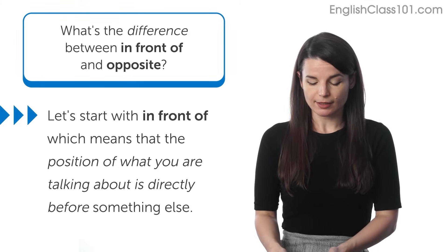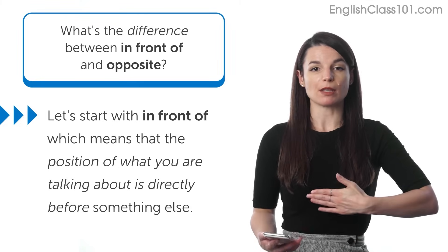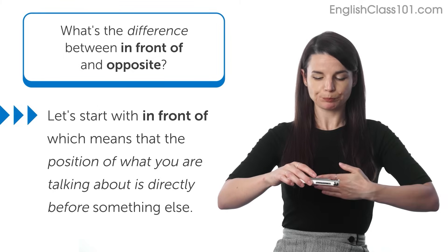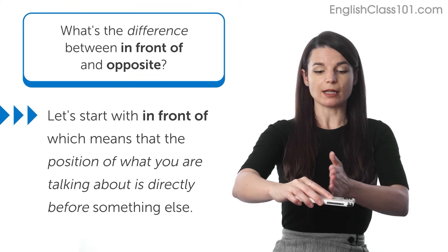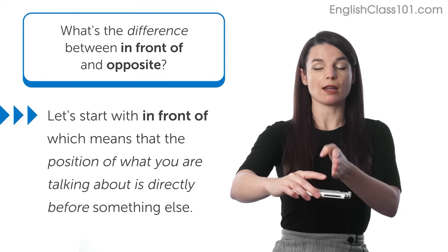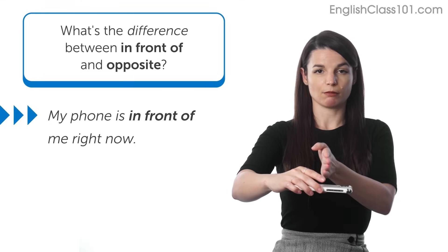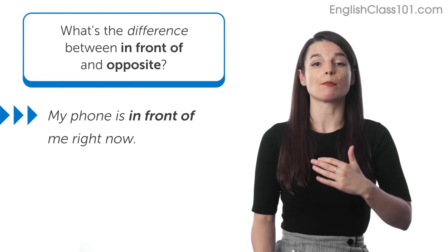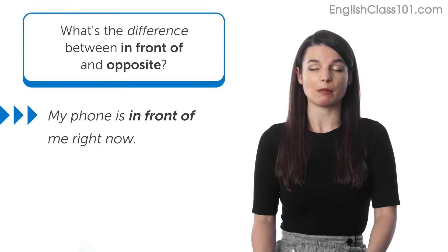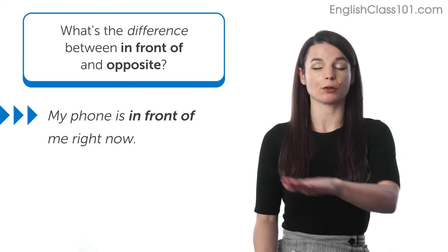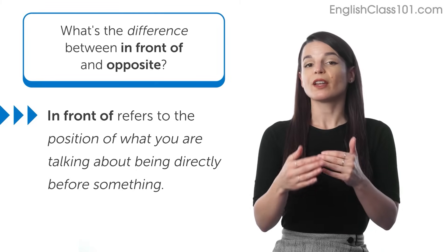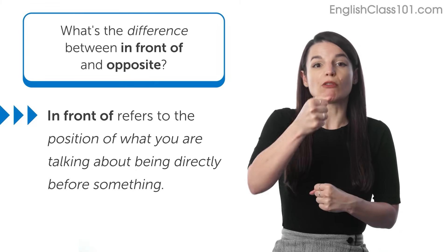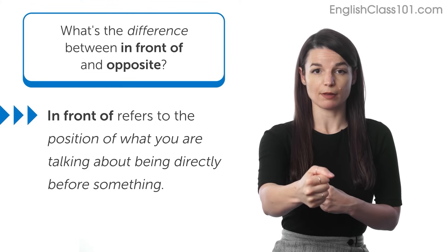So when we say that something is in front of something else, it means that the position of that thing, for example, my phone, is directly like before something else. So I could say, my phone is in front of me right now. Yeah? Or when you think of like your house, you might be able to think of something that is in front of your house. Maybe there's a fence in front of your house or a road in front of your house, right? So in front of refers to anything that is in the position like before you or before something else.